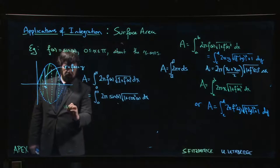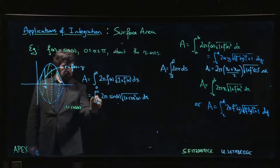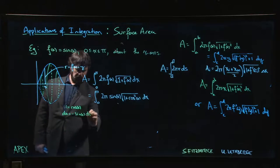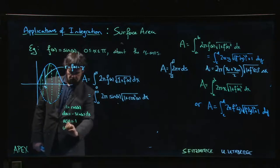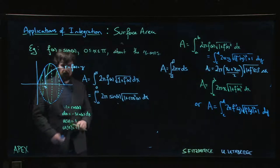So we let u equal to cos x. Du will be minus sine x dx. u at 0 is 1. u at pi is minus 1.